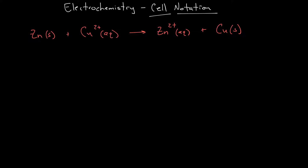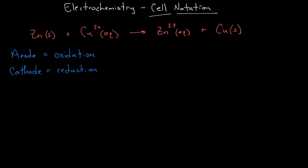The first thing you want to do is look for the anode and the cathode. These two terms indicate the site of oxidation and the site of reduction. The anode is the site of oxidation. You can remember this with the saying 'red cat and ox' — reduction at the cathode, and the anode is oxidation.